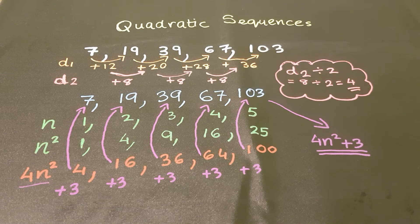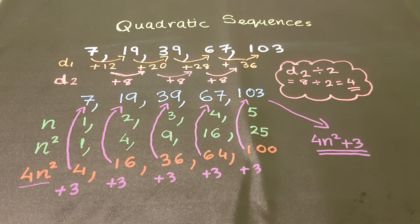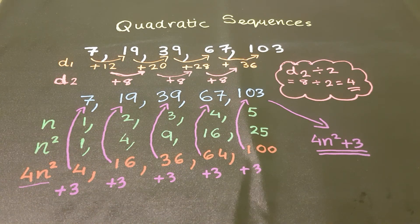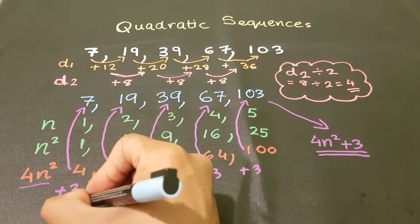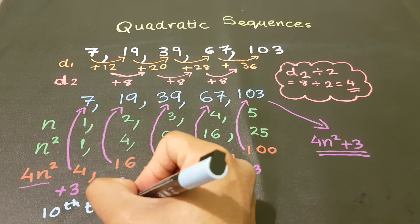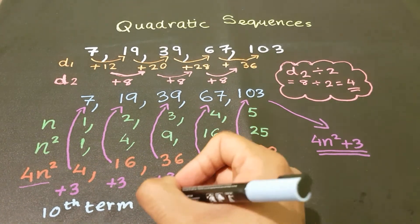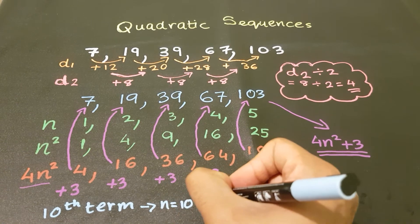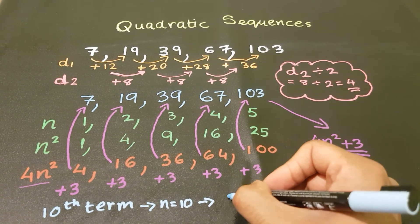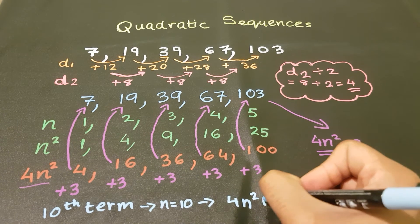To find, say, the 10th term of this sequence, like the previous video, we just have to make n equals 10. So I should try and show you if n equals 10. Let's do that. 10th term. To find the 10th term, we know that n is equal to 10.